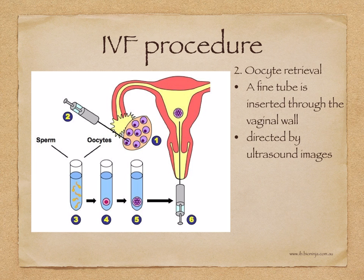The second step is oocyte retrieval. A fine tube is inserted through the vaginal wall and guided by ultrasound images, with the needle directed to the ovary. The oocyte retrieval is done under anesthesia.